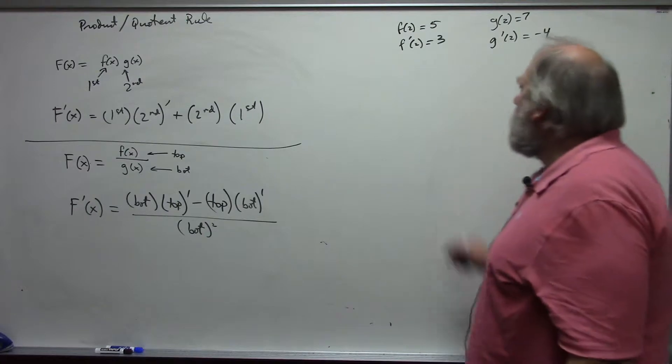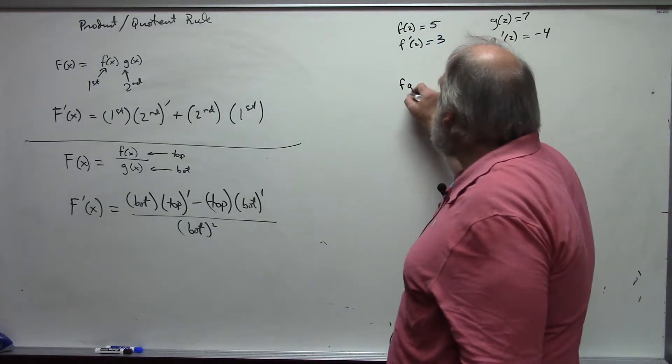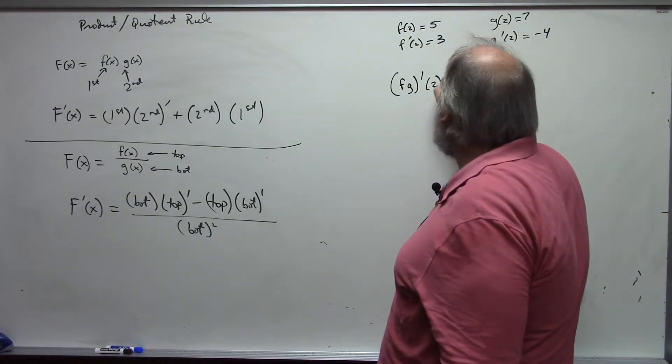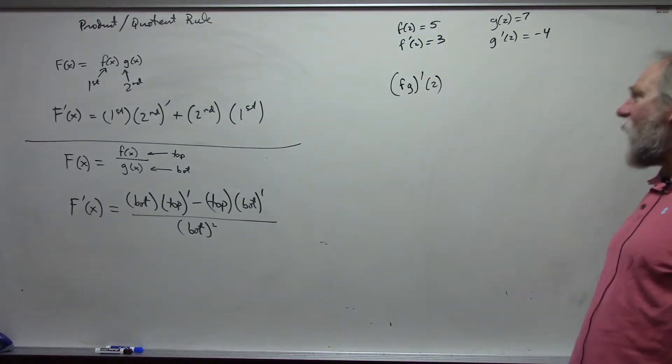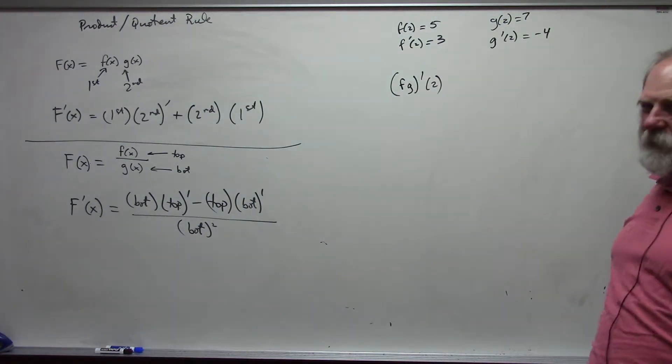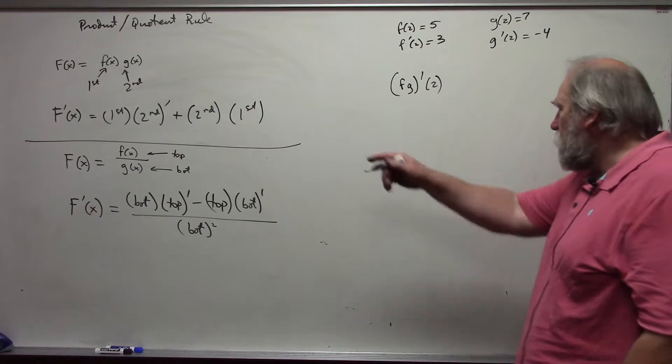So, if I want f g prime at 2, the derivative of the product, it is not the product of the individual derivatives. Do not say negative 12, that would be incorrect. We have to follow the product rule given over there.